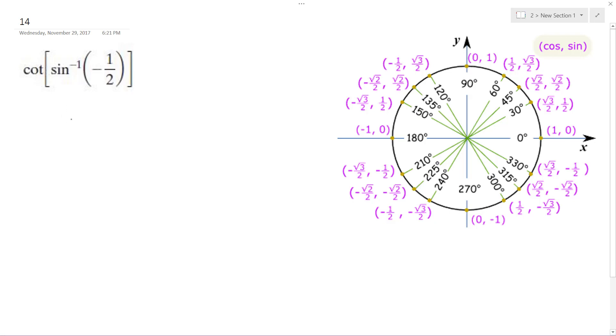Alright, figuring out this problem. We got the cotangent of the inverse sine of negative one-half. Inverse sine's bound between negative pi over two and pi over two, so we're going to be looking in quadrant four in this case.